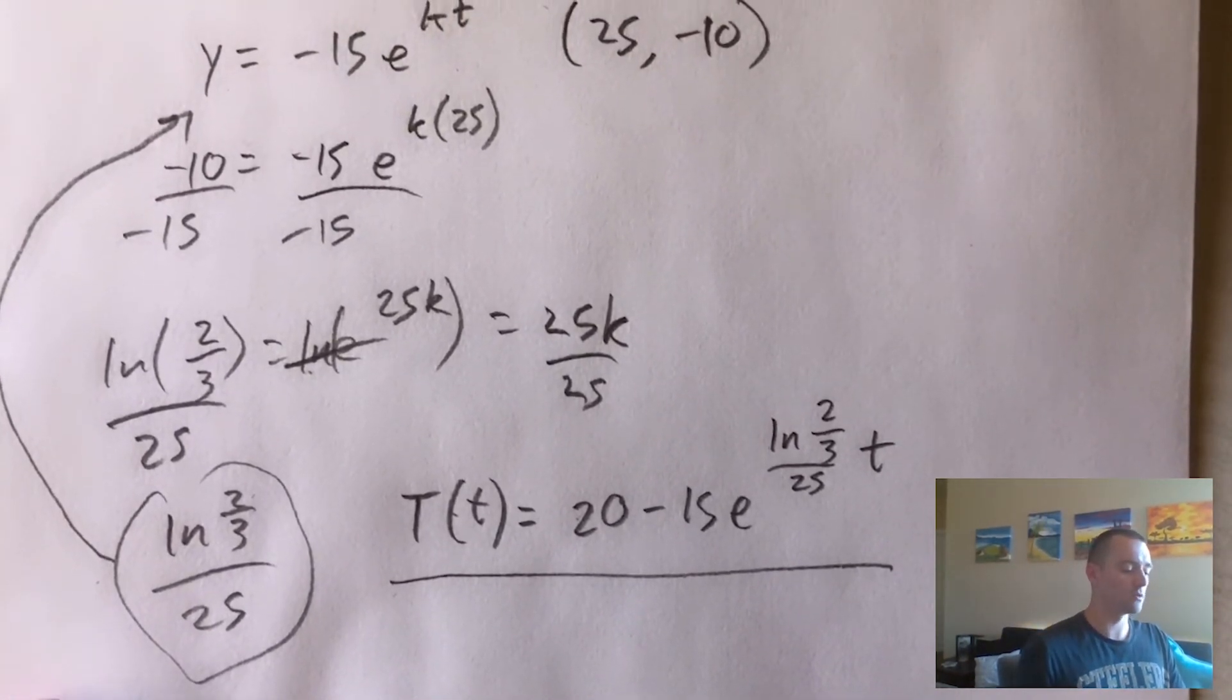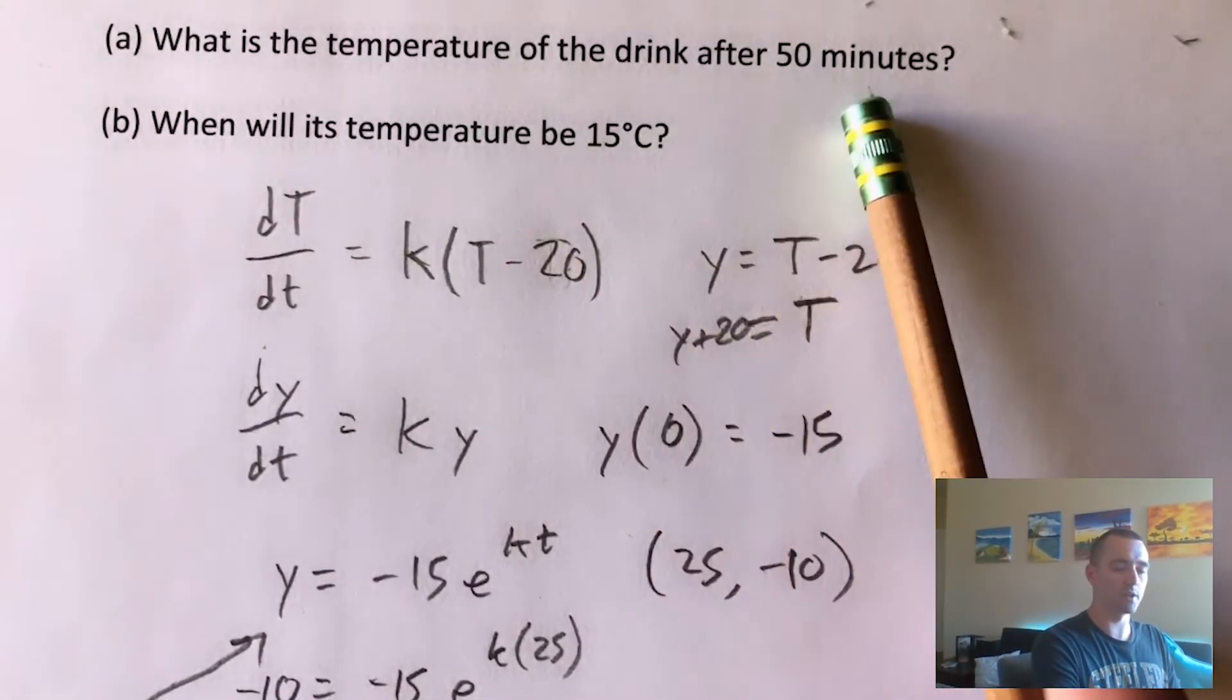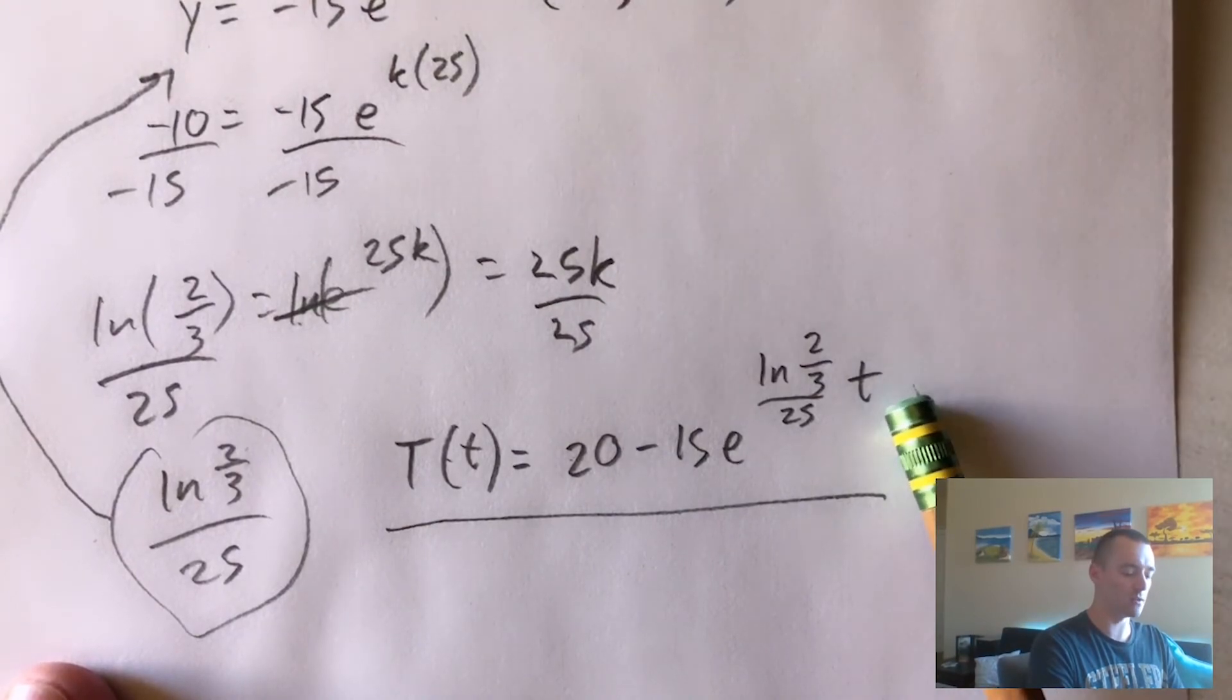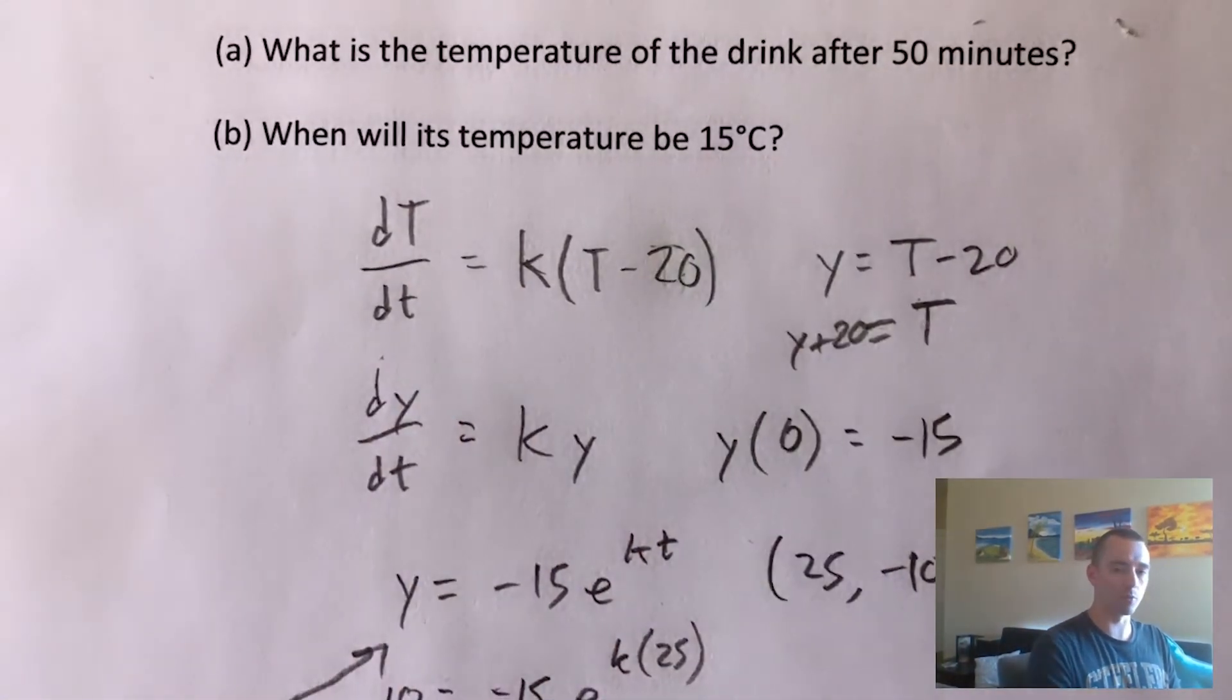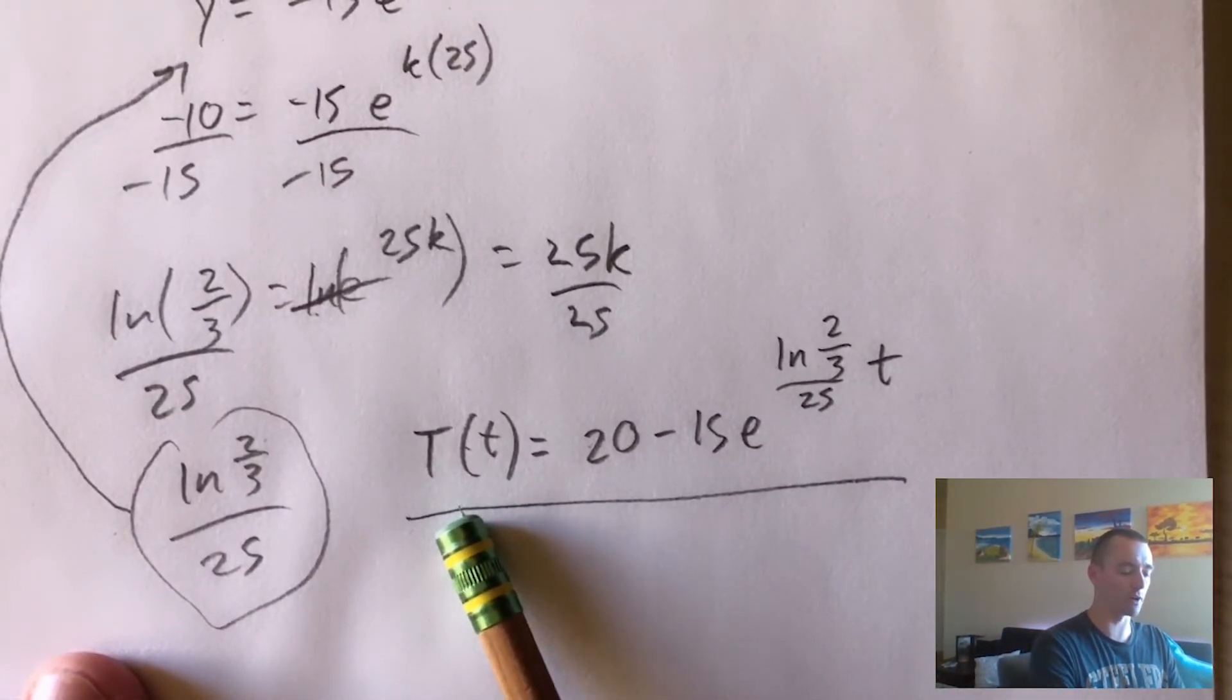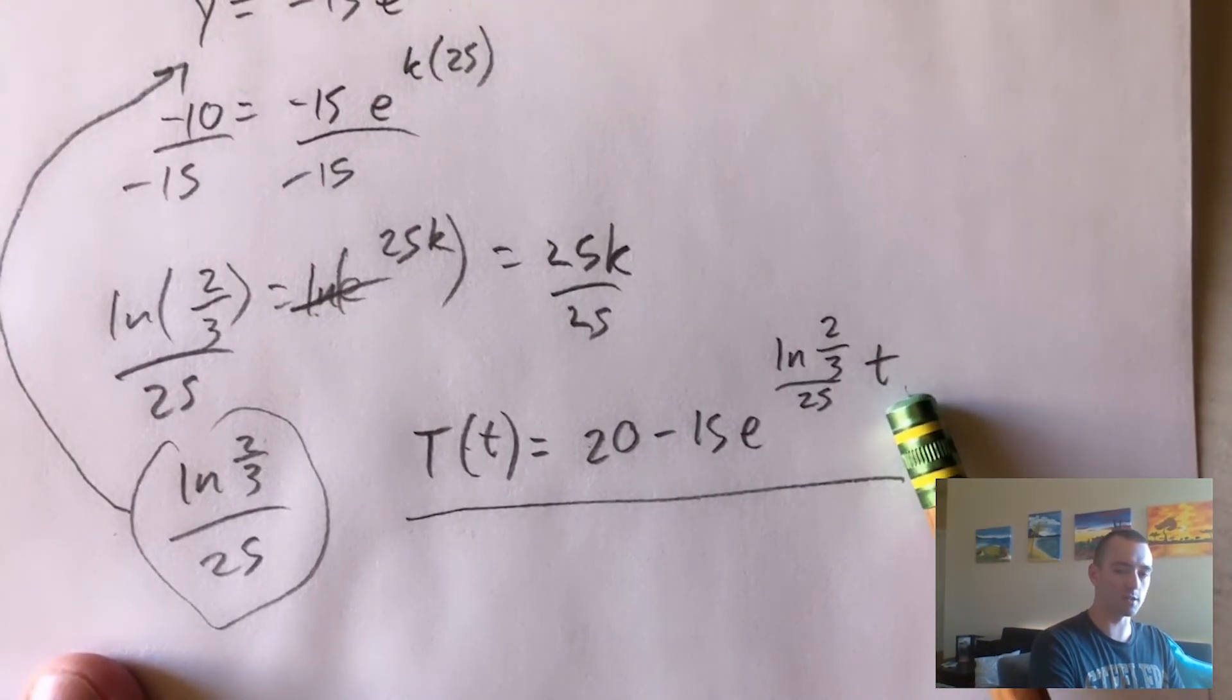So now to figure out what the temperature of the drink is after 50 minutes, all we would have to do is take this equation, plug in 50 for t. And then if we want to figure out when its temperature will be 15 degrees, all we would have to do is plug in 15 for the temperature over here, and then solve for our t over here.